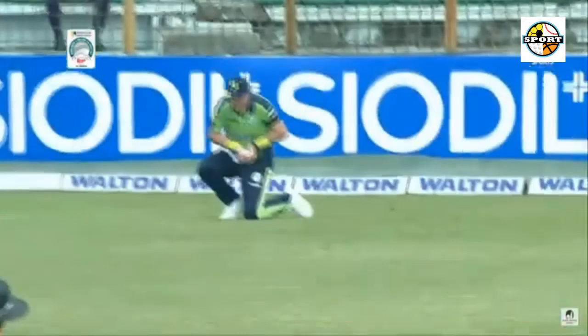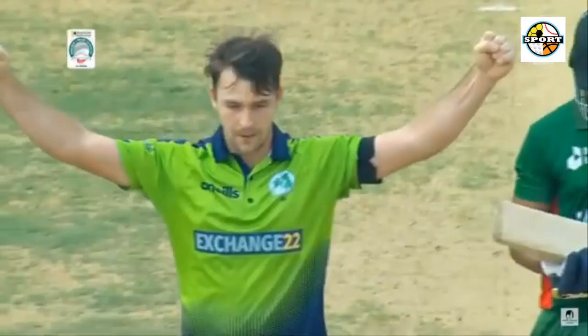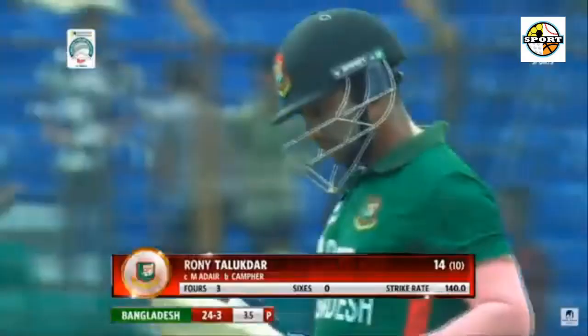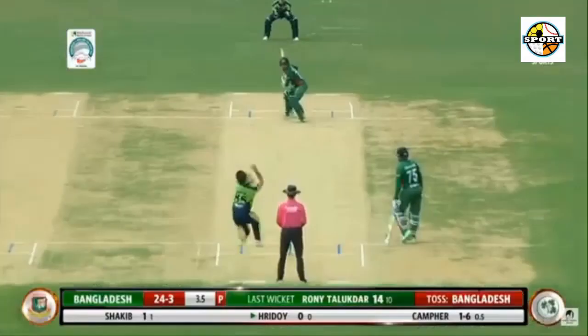6.6: Benjamin White to Rashad Hossein, 6 — tossed up, right under the bat of Rashad Hossein who swings it downtown. His first runs in international cricket — a 6 over the bowler's head.